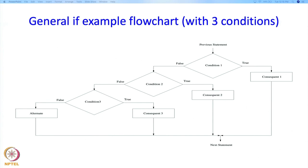I want to describe the if statement with 3 conditions as a flowchart. So over here we have the flowchart of the previous statement. Control executes the previous statement and now enters the if statement. The if statement has 3 conditions, so it executes condition 1 first. If condition 1 is true, then consequent 1 is executed. After that, none of the other conditions or consequents are executed — we directly go on to the next statement, declaring this if statement's execution over.